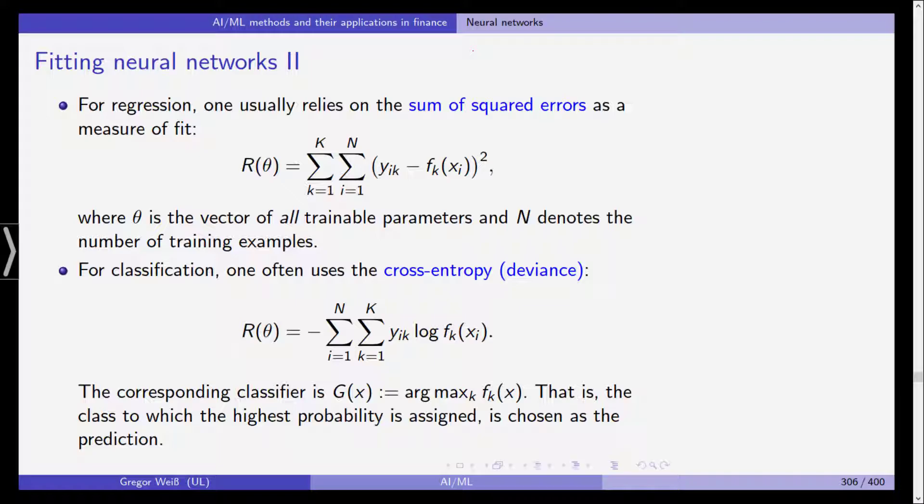Well, we have to distinguish between regression analysis and classification. For regression, usually you rely on the sum of squared errors as a measure of fit. So for example, we use the cost function R of theta being the squared errors y_ik. Those are the observations we have for the k outputs. Remember that even though this is regression analysis for the neural network, we can actually have more than one response variable minus our predictions. We square them and then we add all this up for all observations but also for all outputs. Theta is the vector that contains all trainable parameters, so all the weights of the neural network, and we have N training examples.